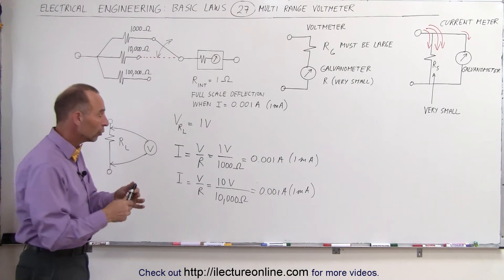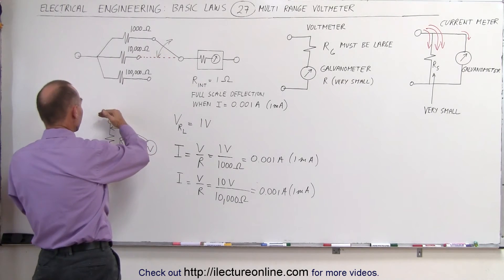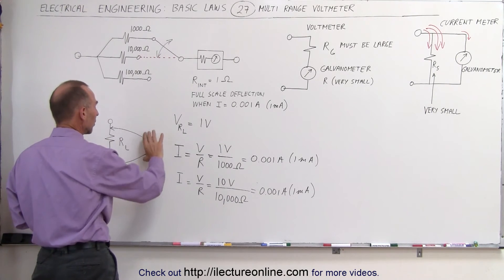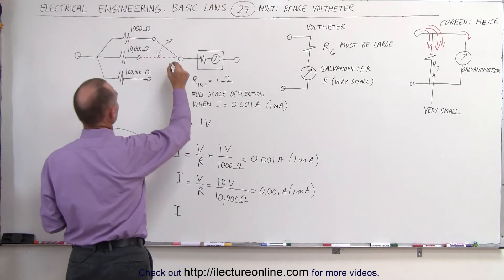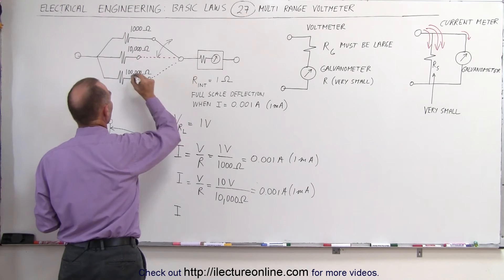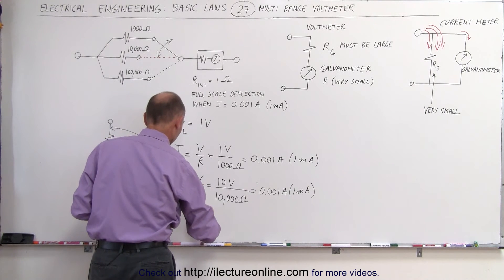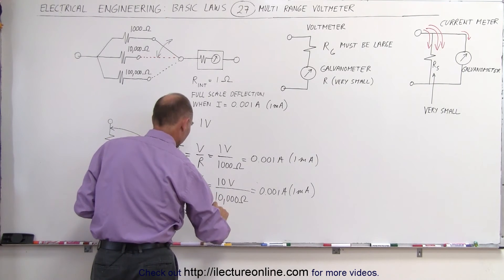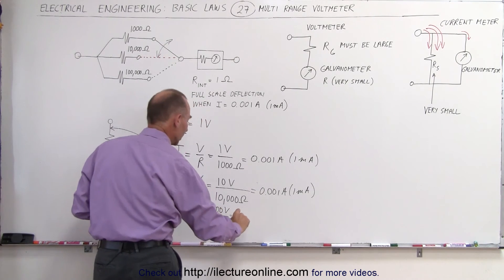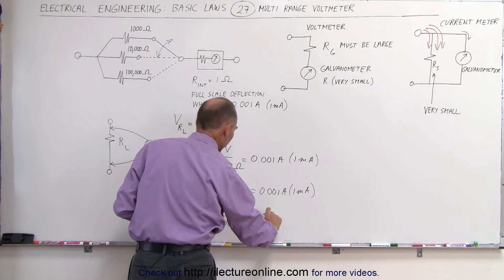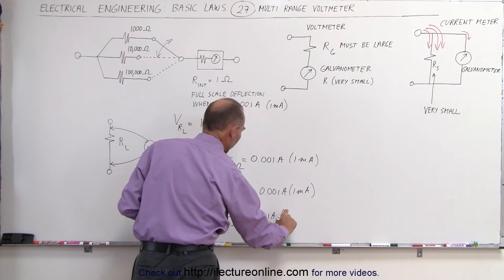If you want to measure 100 volts, if for some reason there's 100 volts put across this load resistor, we want to be able to measure that voltage, then we require an even bigger resistor, the 100,000 ohm resistor, this is equal to V divided by R, 100 volts divided by 100,000 ohm resistor is also equal to 0.001 amp, which is equal to 1 milliamp.